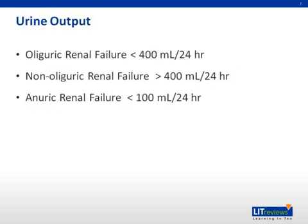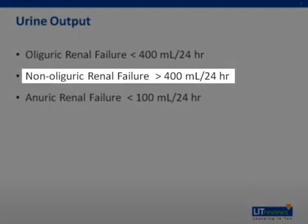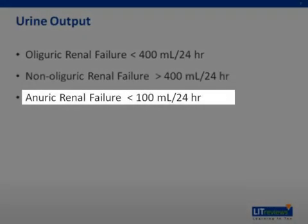When discussing acute renal failure, it is important to determine the quality of urine output. Oliguria is defined as less than 400 mL of urine in 24 hours. Non-oliguric renal failure is defined as urine output greater than 400 mL in 24 hours. Anuric renal failure is less than 200 mL in 24 hours.